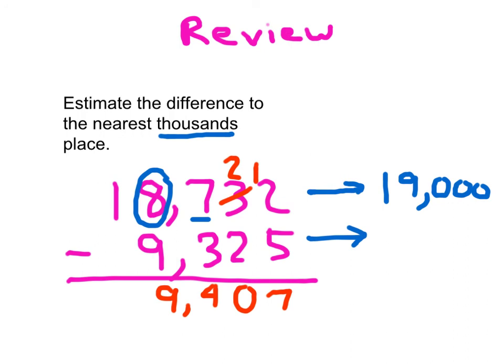9,325 would round to what? 9,000, right? And what do we do with those two numbers? We subtract them. And when we subtract them, we get 10,000 as our estimated answer to the thousand's place. Relatively close to each other, so we think that our answer is reasonable. The reason that it actually is higher is because the number that we were subtracting from went up and the amount that we were taking away actually went down. So it makes sense that our exact answer would be smaller than our estimate, not rounded. So that's all you need to know about estimating differences.